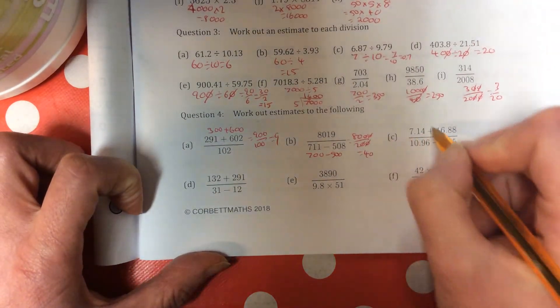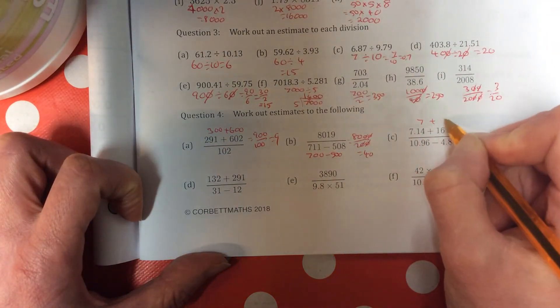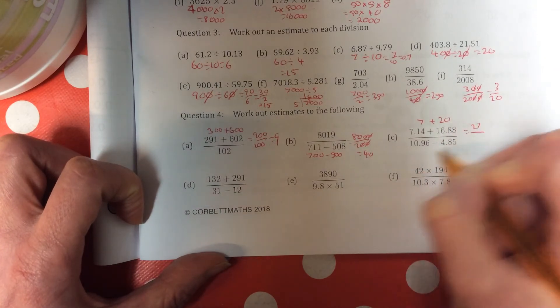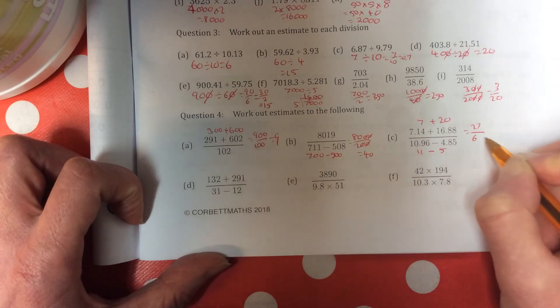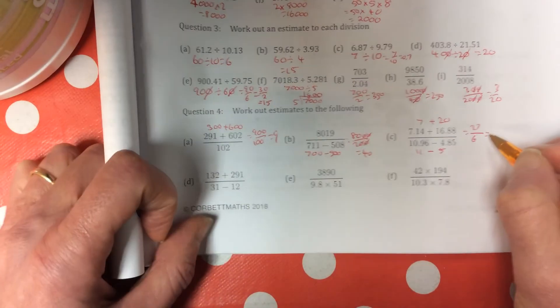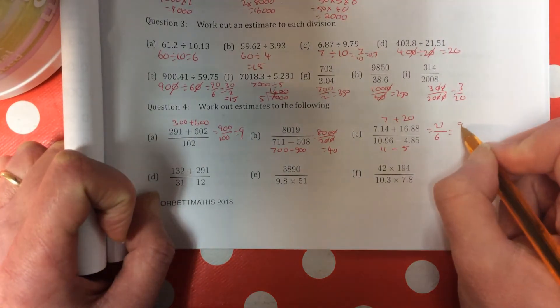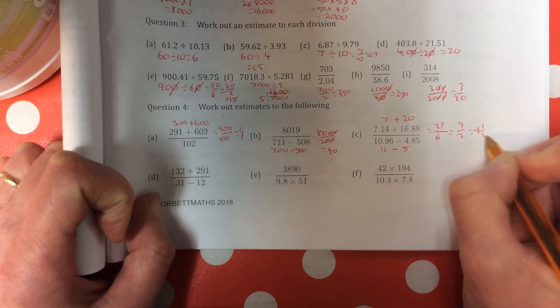Question part C. Top line is 7 plus, that will become 20, so it will be 27. Divide it by 11. Take away 5, which is 6. 27 divided by 6. If you can't get this one, don't worry. Divide top and bottom by 3 to give you 9 over 2, which is 4 and a half.